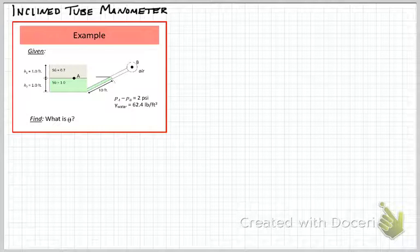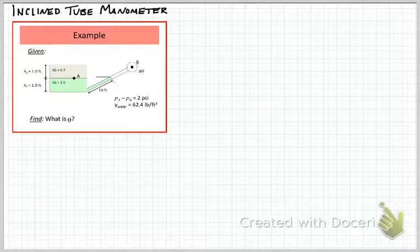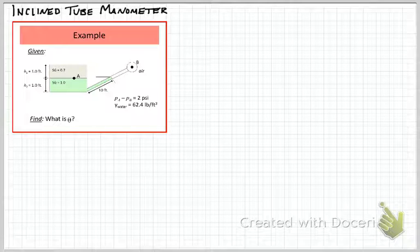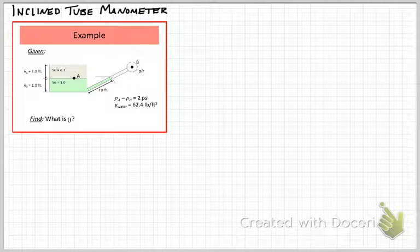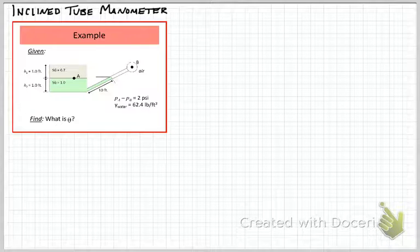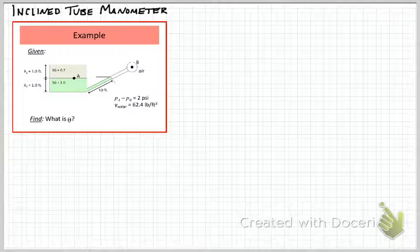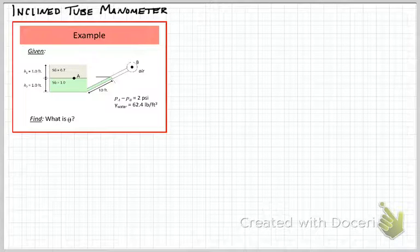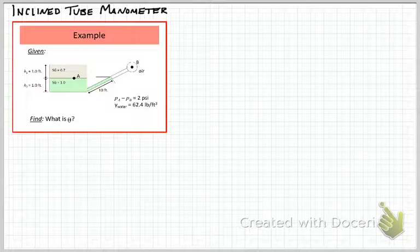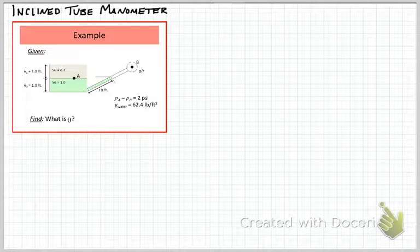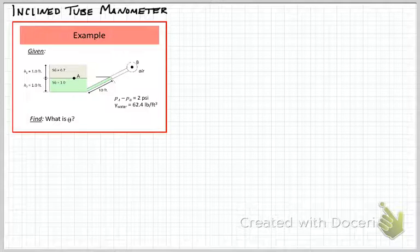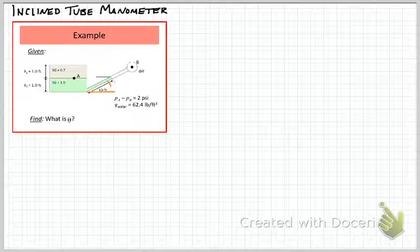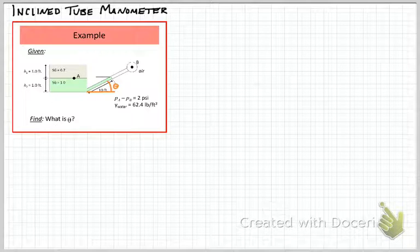Here we've got two layered fluids on the left with given specific gravities, points labeled at A between the two fluids where their interface exists, and pressure B in a sealed vessel containing air. Given a pressure differential and a known measurement along the manometer, the question here is what is theta, the angle of that inclined tube manometer shown in orange on your slide.